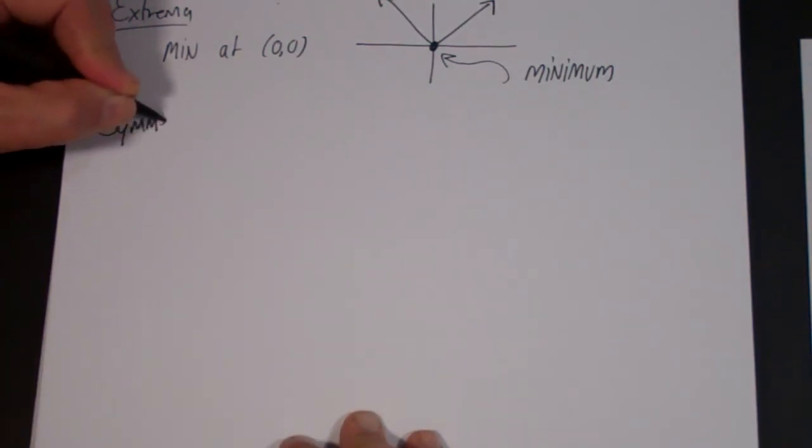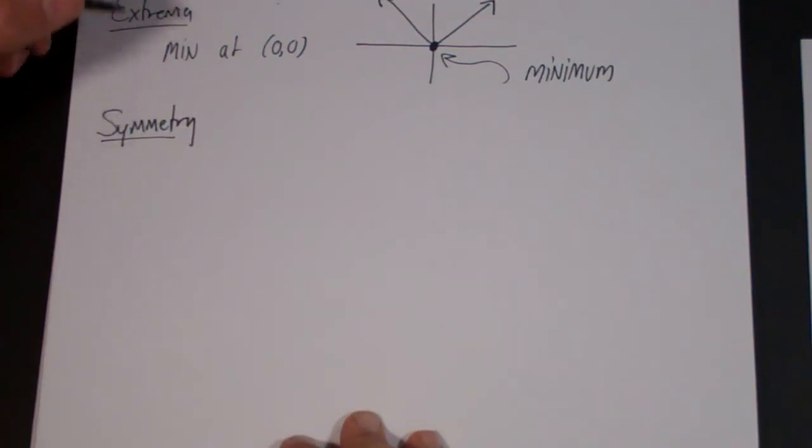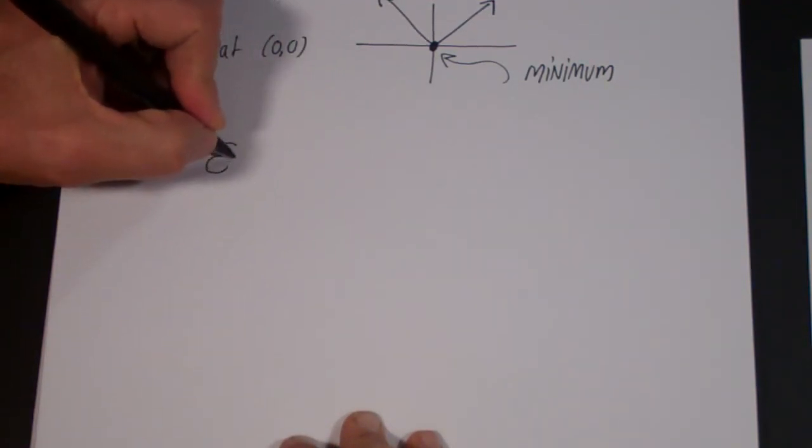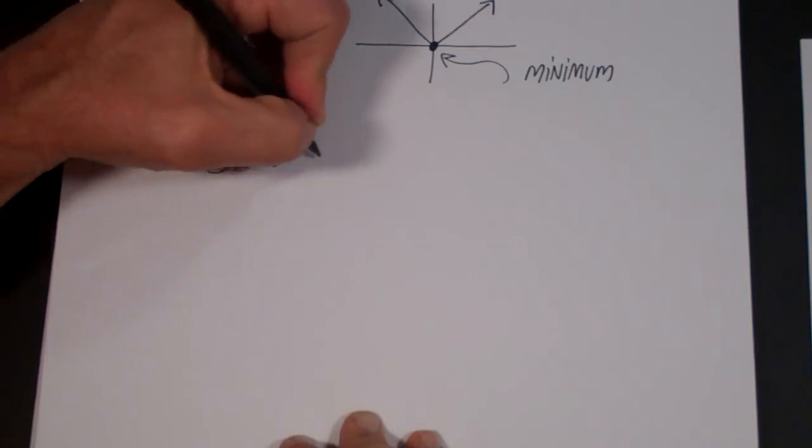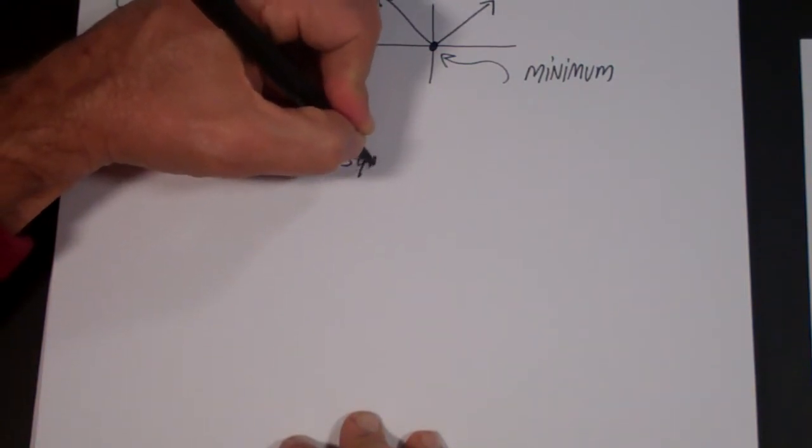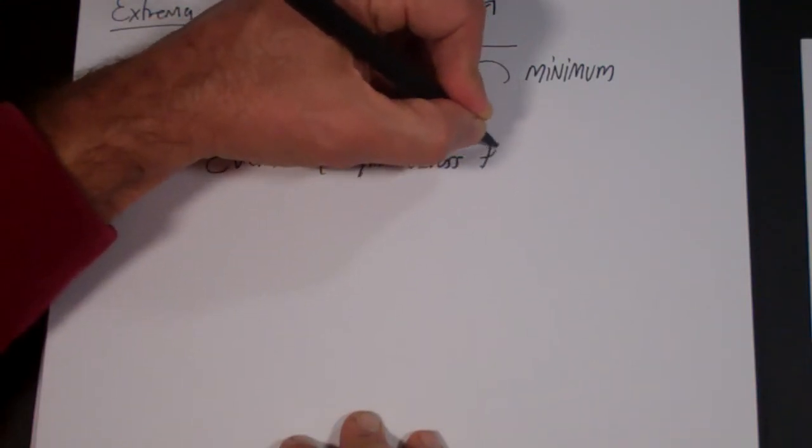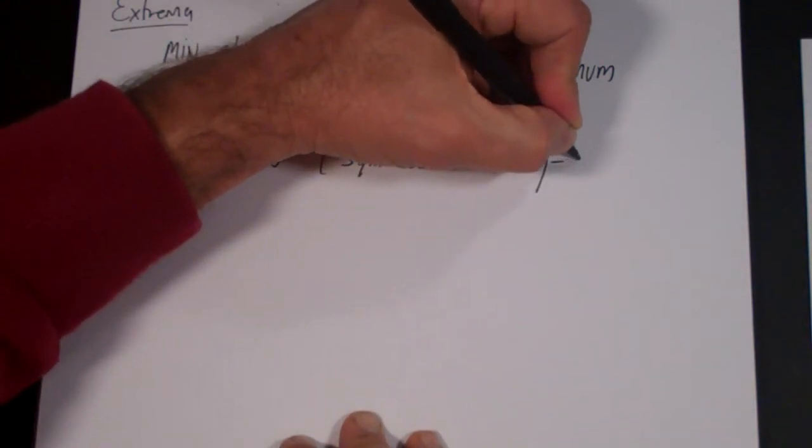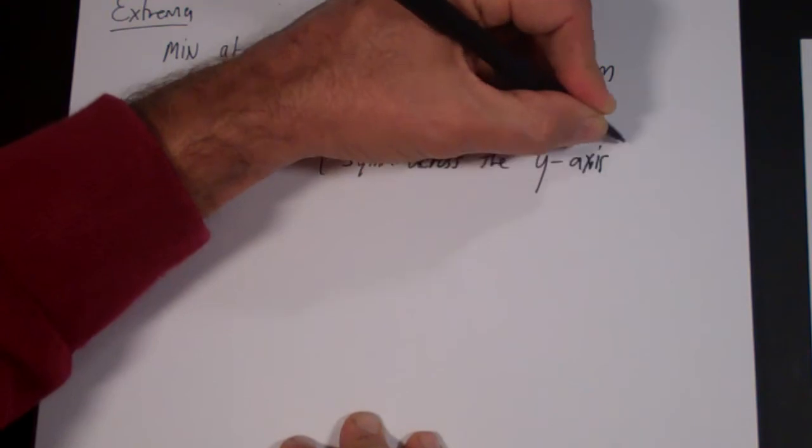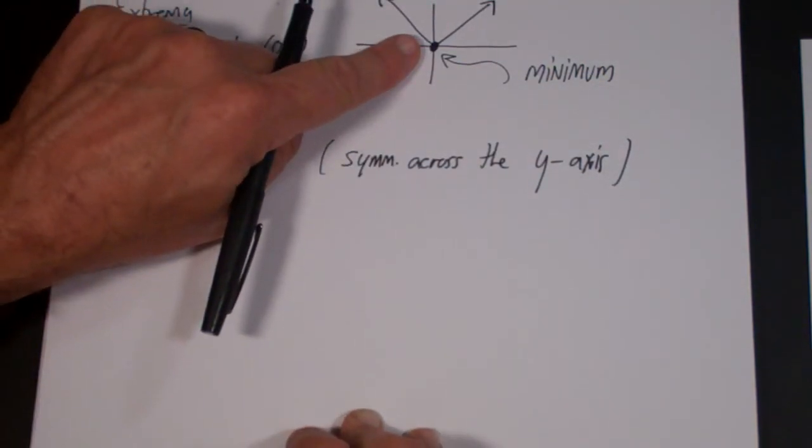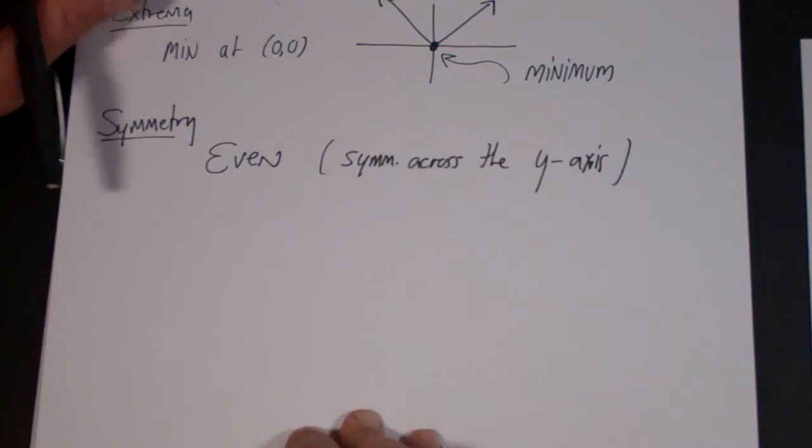Symmetry has to do with whether it is even or odd. And this turns out to be an even function, which means it is symmetric across the y axis. That is what even means. And the way to remember this is this looks very much like y equals x squared and x squared is an even function.